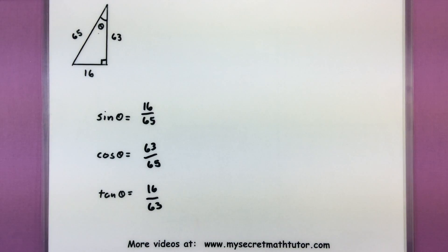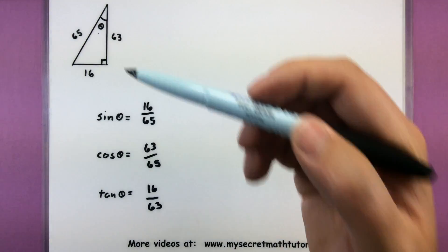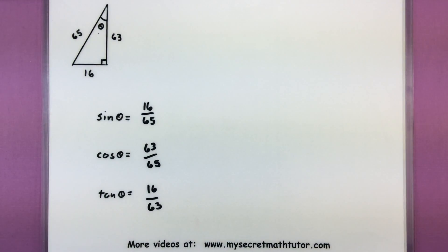So be careful when you're trying to find the exact trigonometric values for one of these right triangles. Make sure you identify that angle first. That way you can easily figure out what is your adjacent, opposite, and hypotenuse. If you'd like to see some more videos, please visit MySecretMathTutor.com.